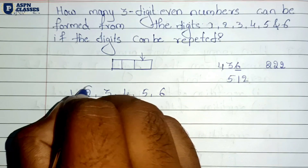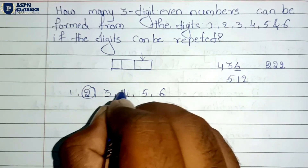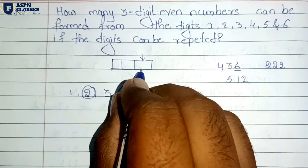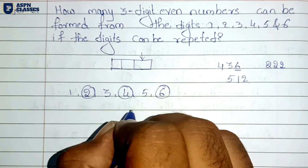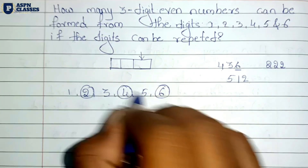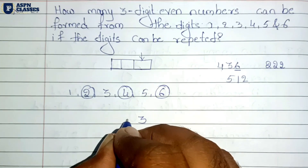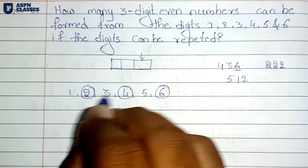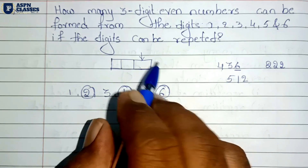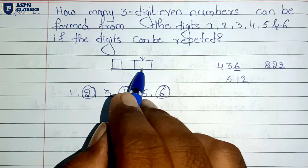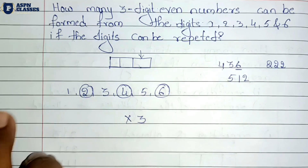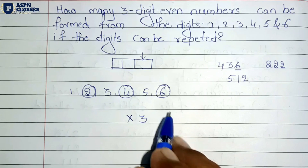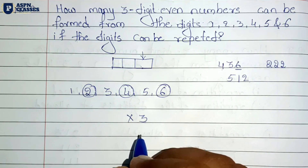So there are 3 possibilities for the unit place — we can fill it with 2, 4, or 6. There are 3 possibilities in the unit place.